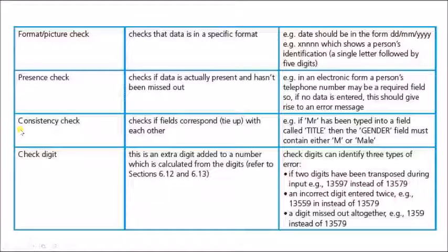The consistency check is checking if the fields correspond or tie up with each other. Like if you have the mister here as a title, so it should be the gender male. And if it is Mrs. or Miss, so the gender will be female. The data should be consistent. This is the consistency check.